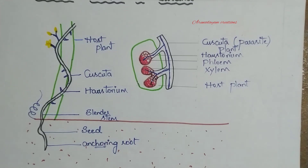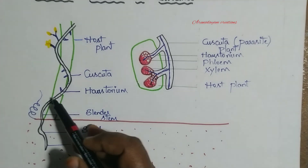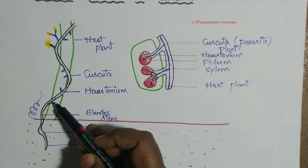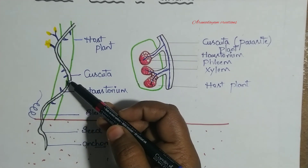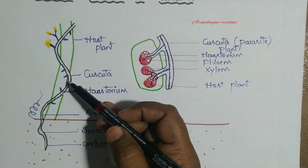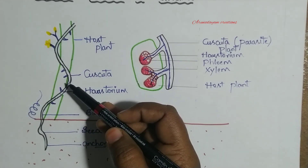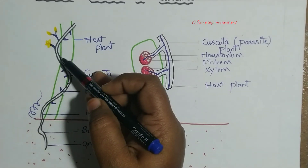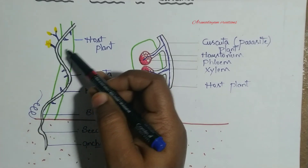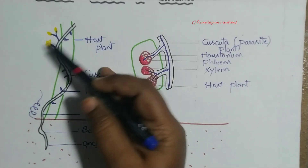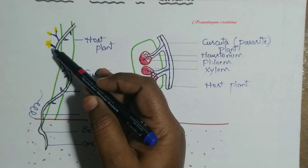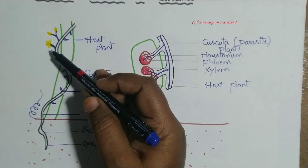After the complete establishment of its body on the host plant, when the Cuscuta plant is completely supported by food and water from the host, it starts producing branches, flowers, and reproducing seeds.